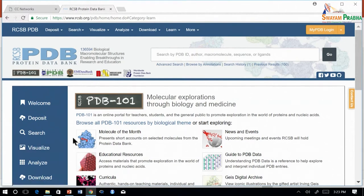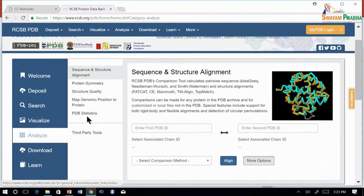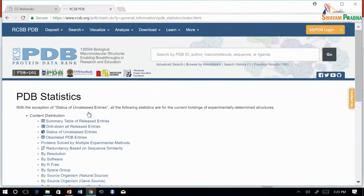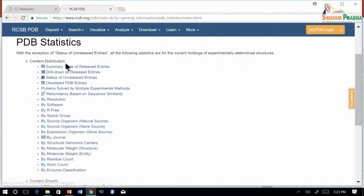Now we will see the statistics of PDB database. These can be found here. The statistics are grouped under two sections: content distribution and content growth. Content distribution contains statistics on the data currently deposited in PDB.